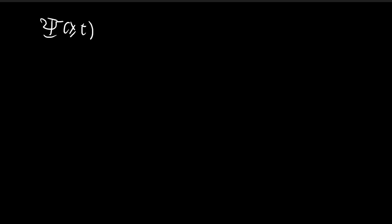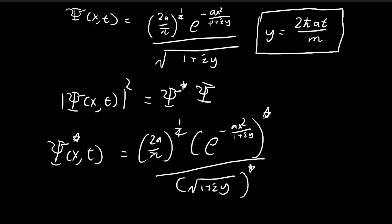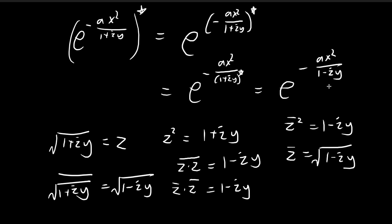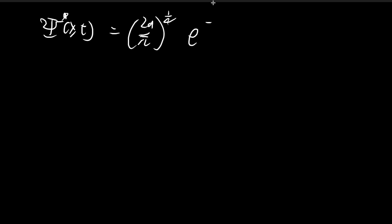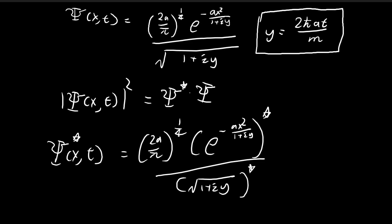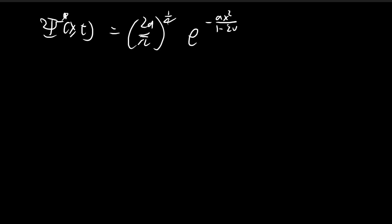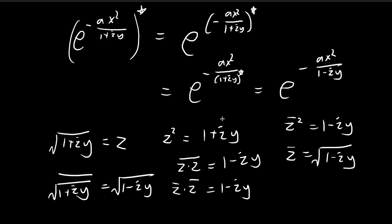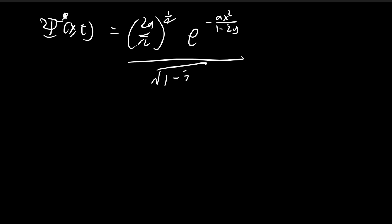We've now found the individual conjugates of the numerator and denominator, so we can substitute our results in. The conjugate of the wave function has e^(−ax² / (1−iy)) in the numerator and √(1−iy) in the denominator. Note: I use both the star and bar notation to represent a conjugate — they mean the same thing.